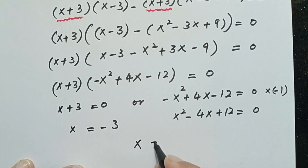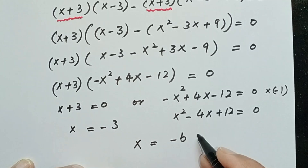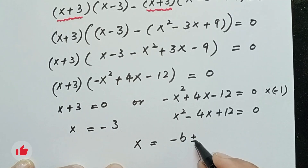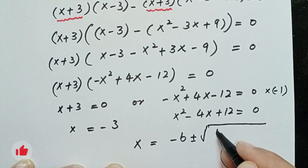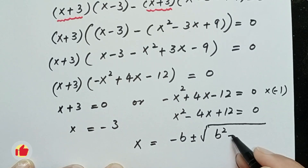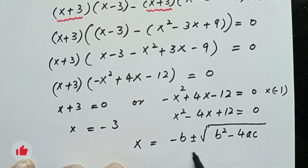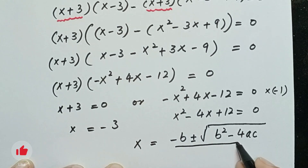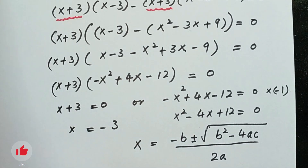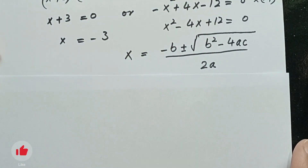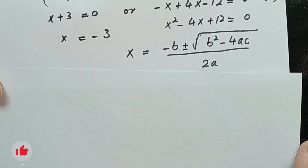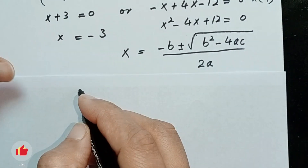Since x squared − 4x + 12 = 0 is a quadratic equation, we will use the quadratic formula: x = (−b ± √(b² − 4ac)) / 2a, using the values a = 1, b = −4, and c = 12.